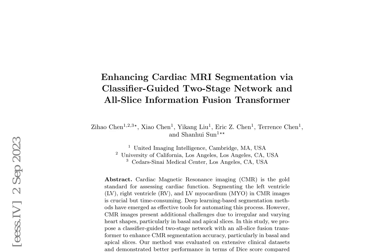Cardiac magnetic resonance imaging, CMR, is the gold standard for assessing cardiac function. Segmenting the left ventricle, right ventricle, and LV myocardium in CMR images is crucial but time-consuming. Deep learning-based segmentation methods have emerged as effective tools for automating this process. However, CMR images present additional challenges due to irregular and varying heart shapes, particularly in basal and apical slices.